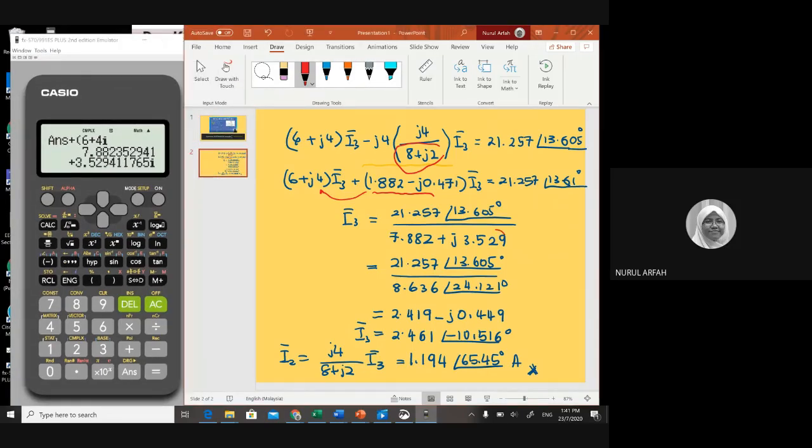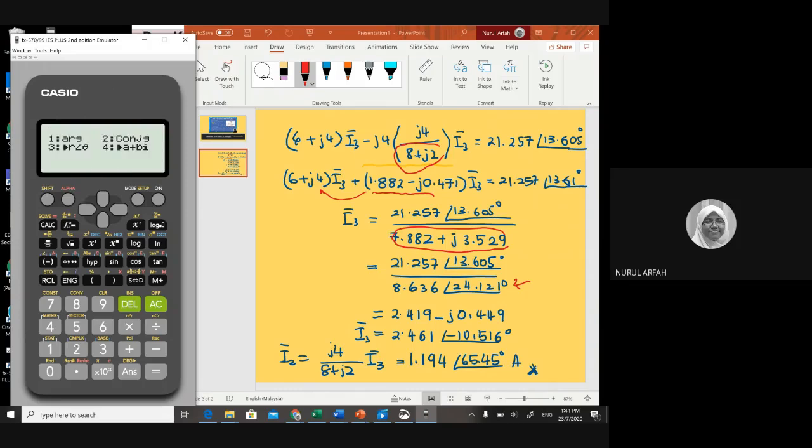If you want to convert it into phasor form like this, you can do it by pressing shift, and then go to 2. Two is complex form. Then you can choose number 3, which is phasor, and press equals. You get 8.636, and then view the rest.